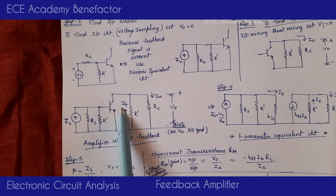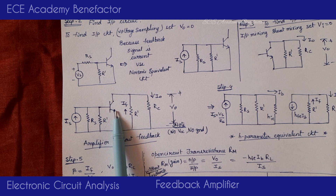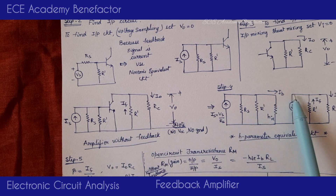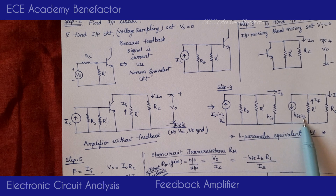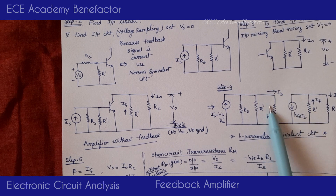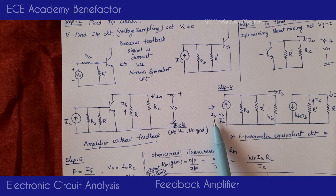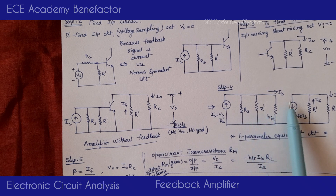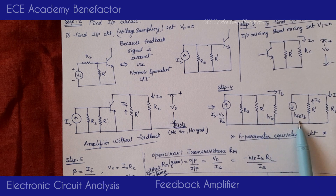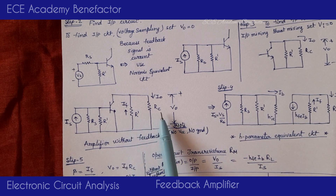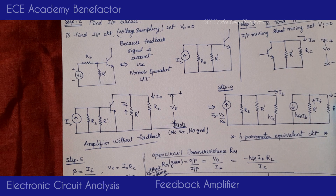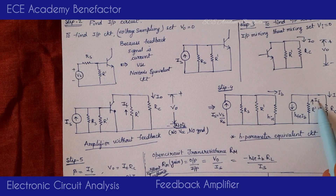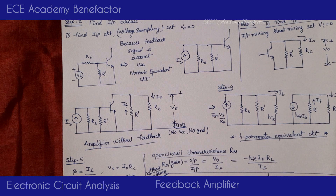Now we replace the transistor with its approximate H-model comprising HIE and HFE. HIE and HFE·IB replace the transistor, where IB is the current flowing through HIE. The input circuit is Is, Rs, R', and the transistor is replaced by HIE and HFE·IB. At the output side we have R' and RC. The current flowing through R' is IF, and the current flowing through RC is I0.